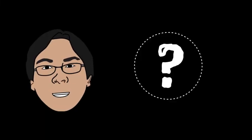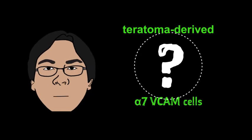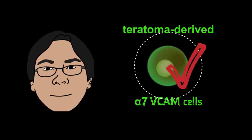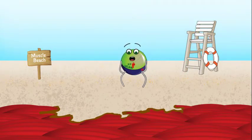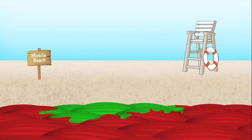So, we were very interested to see if our teratoma-derived alpha-7-VCAM cells would also produce muscle stem cells. Not to disappoint, they do. When the transplanted muscles are injured, these alpha-7-VCAM cells respond by multiplying, moving into the damaged area, and repairing the muscle, just like any normal muscle stem cells would do.